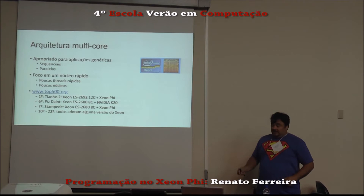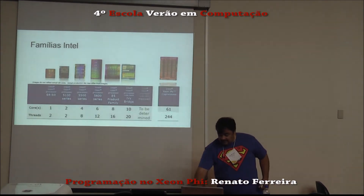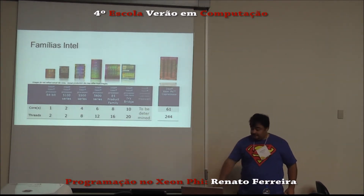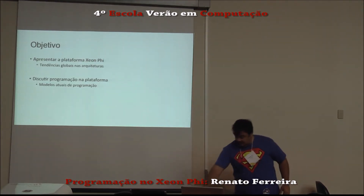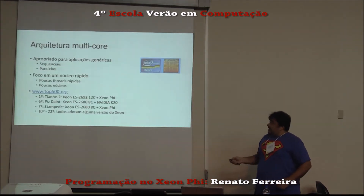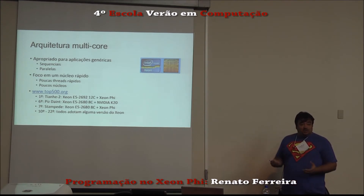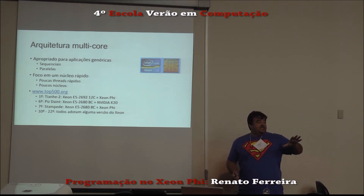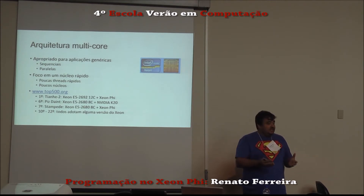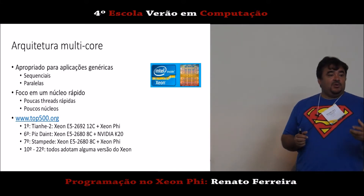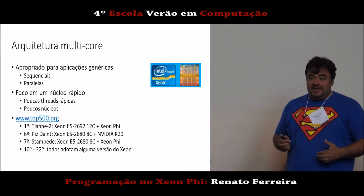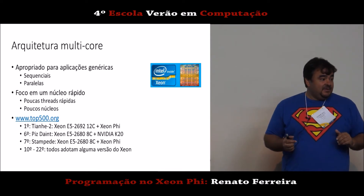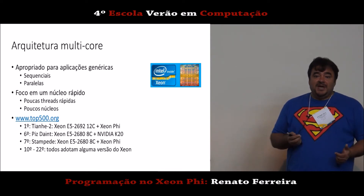A arquitetura multicore da Intel é o Xeon. Ele é um processador genérico, de propósito geral, feito para desempenho, mantendo a tradição da Intel de preservar o legado. Isso é uma tradição boa, mas ao mesmo tempo é um fardo gigantesco. A arquitetura Intel poderia ser muito melhor se eles conseguissem esquecer o legado. Só que eles já tentaram fazer isso e foi um fracasso de mercado.